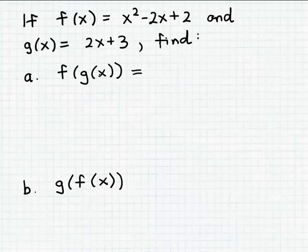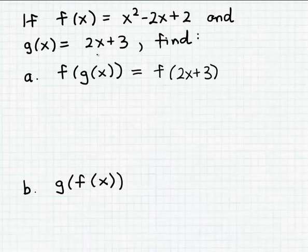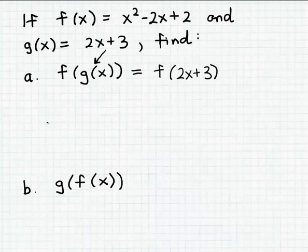We know what the output from function g for input x is because that's given by the formula for g. So where we have g of x in this expression, we can substitute the formula for g, which is 2x plus 3. Now we want to evaluate f of 2x plus 3. All I'm doing is taking 2x plus 3 and substituting that for the expression g of x inside the function notation for f.